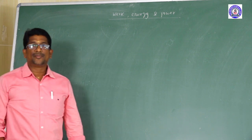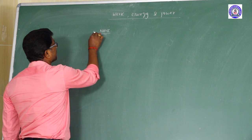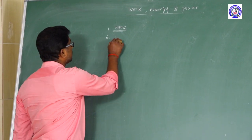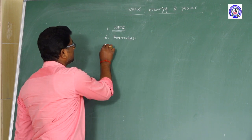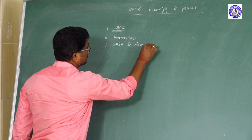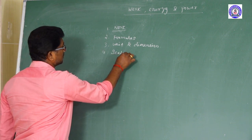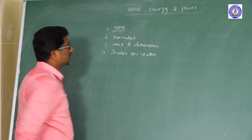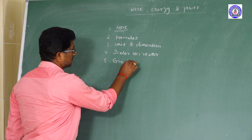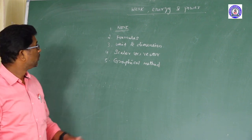In this chapter, first I am going to discuss about what is work, and second what are the different formulas related to work, and its unit and dimension. Next, whether it is a scalar quantity or vector. Next, measurement of work done from the graphical method. Finally, how to solve the problems based on these formulas.